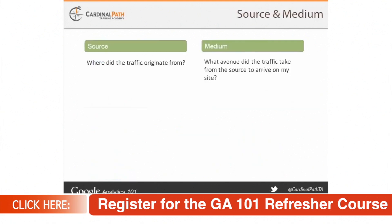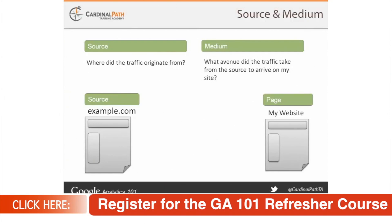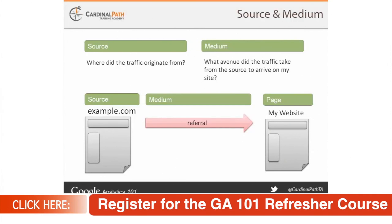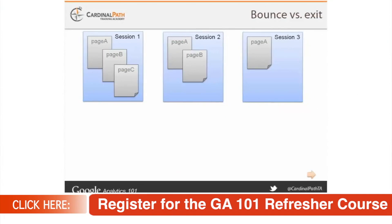Source answers: where did the traffic originate from? Medium answers: what avenue did the traffic take from the source to arrive on my website? For example, let's say we have example.com — this fills the Source dimension. Then we have the destination, which is our website, fulfilling dimensions such as landing page and host name. How traffic flows from the source to the page is the Medium. Mediums from the source may be Referral, if there's a link on example.com; Social, if example.com is a social network; or CPC, if we paid for an ad on the website. In our reports, we can look at this in different ways and build reports centered around any of these dimensions — the page they landed on, the medium they came through, or where they came from.